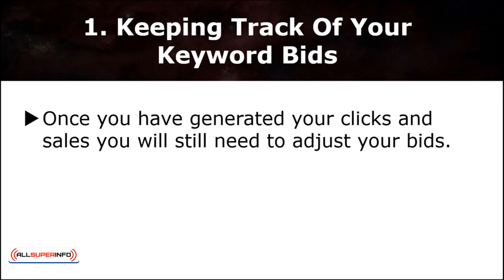First, keep track of your keyword bids. Once you've generated clicks and sales, you'll still need to adjust your bids. If your keywords are generating profit but you're still not ranked as the top campaigner, you should continue to raise your bidding price. However, if your keywords are not generating any profit, you would eventually have to lower your budget in bidding or pause the campaign to improve your game.